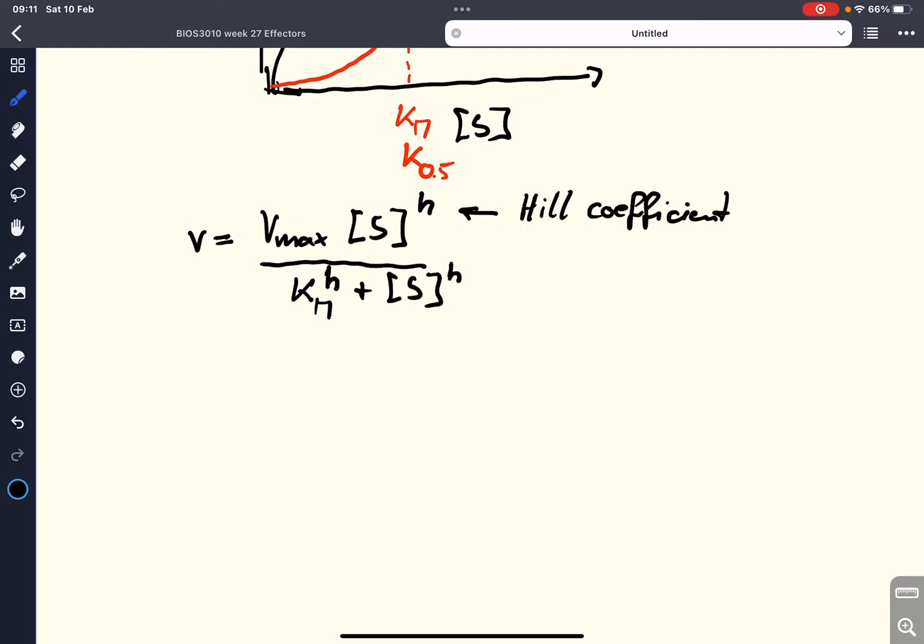And what we need to do is we take this equation divided by Vmax. So we get V over Vmax equals S to the power of H divided by Km to the power of H plus S to the power of H.